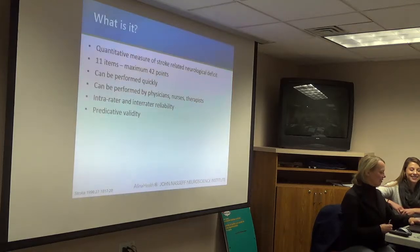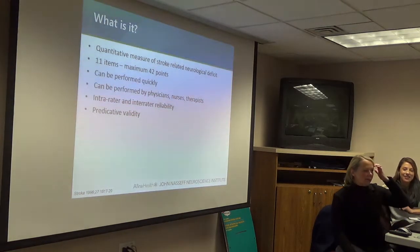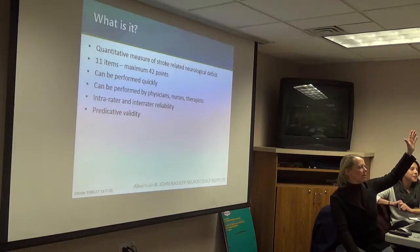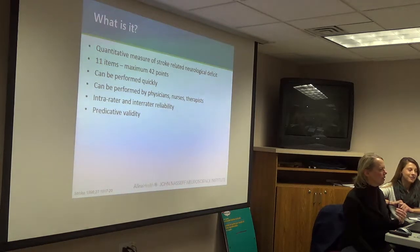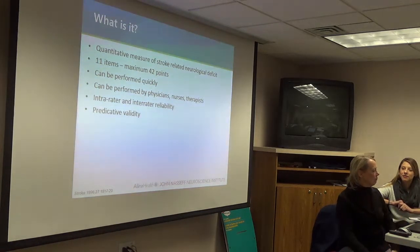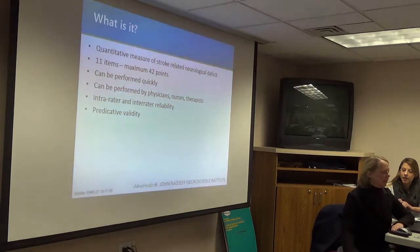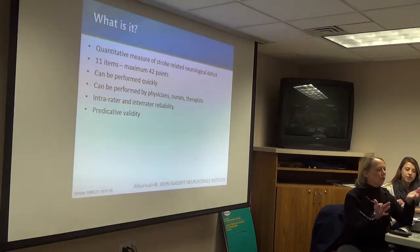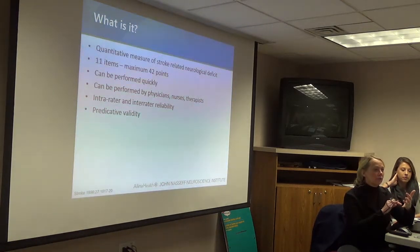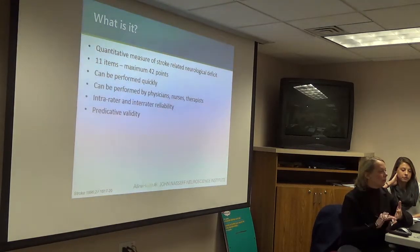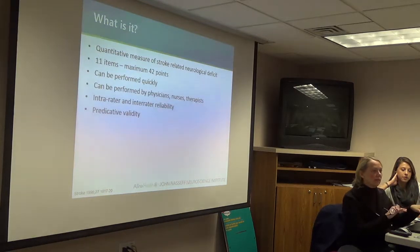Now the NIH Stroke Scale. Many of you have had some training in it. It is a quantitative measure of stroke-related neurologic deficit with 11 items and a maximum of 42 points. It can be performed quickly, and crucially it is reproducible — it can be performed by any number of trained providers and gives a common language for communication between clinicians. Standard nursing neurochecks and physician neurological exams learned in training are not standardized tests and don't give us that common language, which is why we encourage using even the abbreviated NIH Stroke Scale for neurochecks.